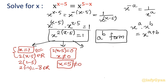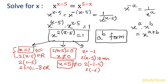Case 3: base is −1, so x = −1, and the exponent must be even. Checking: 2(x−5) = 2(−1−5) = 2(−6) = −12, which is even. So x = −1 is also a solution.